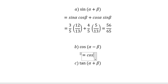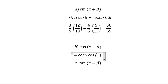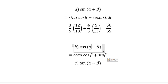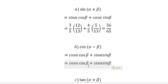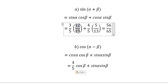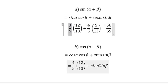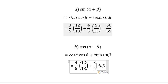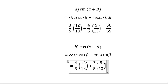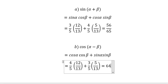Now let's go to the second one: cosine alpha times cosine beta plus sine alpha times sine beta. We calculate and get 63 over 65.